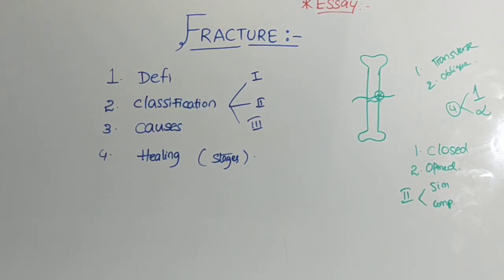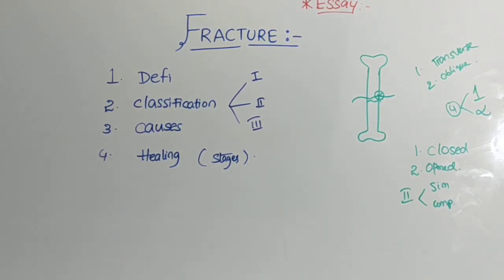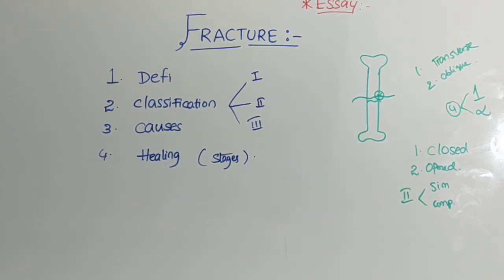Healing of fracture: if asked in viva, you can mention five stages — stage of hematoma, stage of granulation tissue, stage of callus formation, stage of new bone formation, and stage of remodeling. If writing in your examination, you must mention the time period along with each stage: hematoma — less than seven days; granulation tissue — two to three weeks; callus formation — four to twelve weeks; new bone formation — one to two years; remodeling — many years.